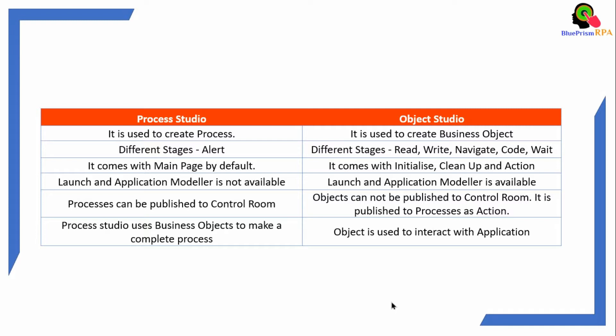We have a different stage — Alert — that is only in Process Studio and not in Object Studio. In Object Studio we have Read, Write, Navigate, Code, and Wait stages, which are different from Process Studio. Process Studio comes with the main page by default.